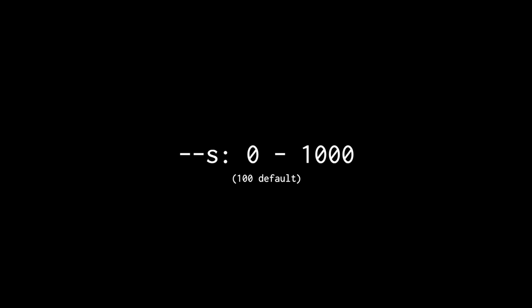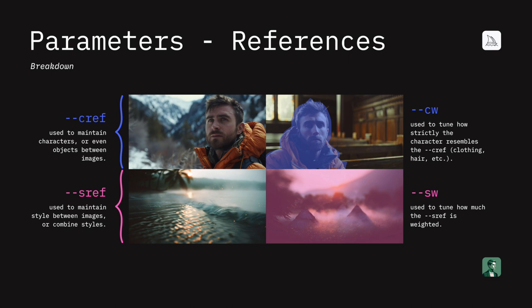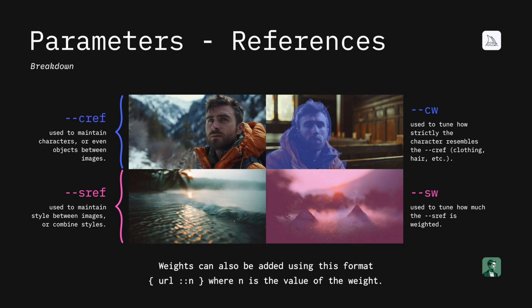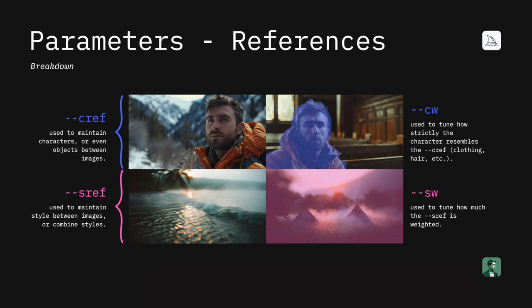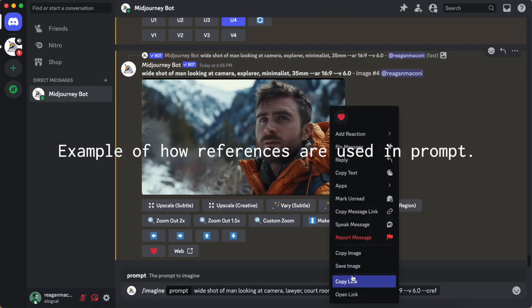Here are the ranges for each of those — they're all slightly different, and style is set by default to 100. Finally, we have references, which are relatively new features for Mid-Journey and extremely powerful. Style reference is used to maintain style between images or combine style from previous images — you take a URL of an image, plug it into the end of your prompt using style reference, and it uses that image's style with your prompt to create the new image. Style weight (SW) tunes how much those images are weighted. Character reference works the same way but for characters, products, or objects in the image, with CW for weighting. For characters, it also helps with choosing hairstyle or clothing.